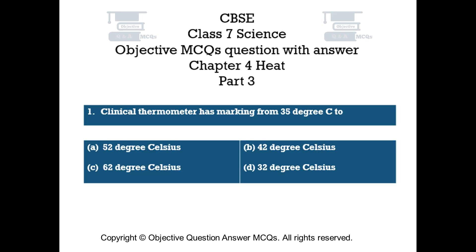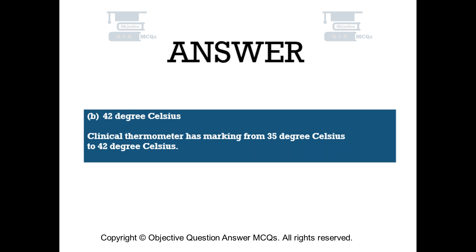Question number 1. Clinical thermometer has marking from 35 degree Celsius to: Option A 52 degree Celsius, Option B 42 degree Celsius, Option C 62 degree Celsius, Option D 32 degree Celsius. The right answer is Option B — 42 degree Celsius. Clinical thermometer has marking from 35 degree Celsius to 42 degree Celsius.